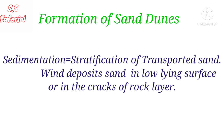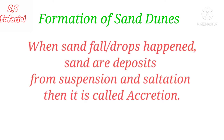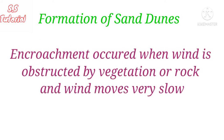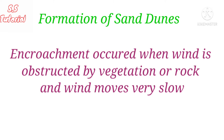Sedimentation is the process of stratification of transported sand. When transported sand particles carried by the wind are deposited onto low-lying surfaces or into various cracks in the rock layer, it is called sedimentation. When sand particles are transported in a floating state or suspension and in saltation, a steady state is obtained and sand is deposited — this is called accretion. When transported sand particles are blocked by small desert trees or rocks, sand particles move forward very slowly by saltation and suspension — this is called encroachment.